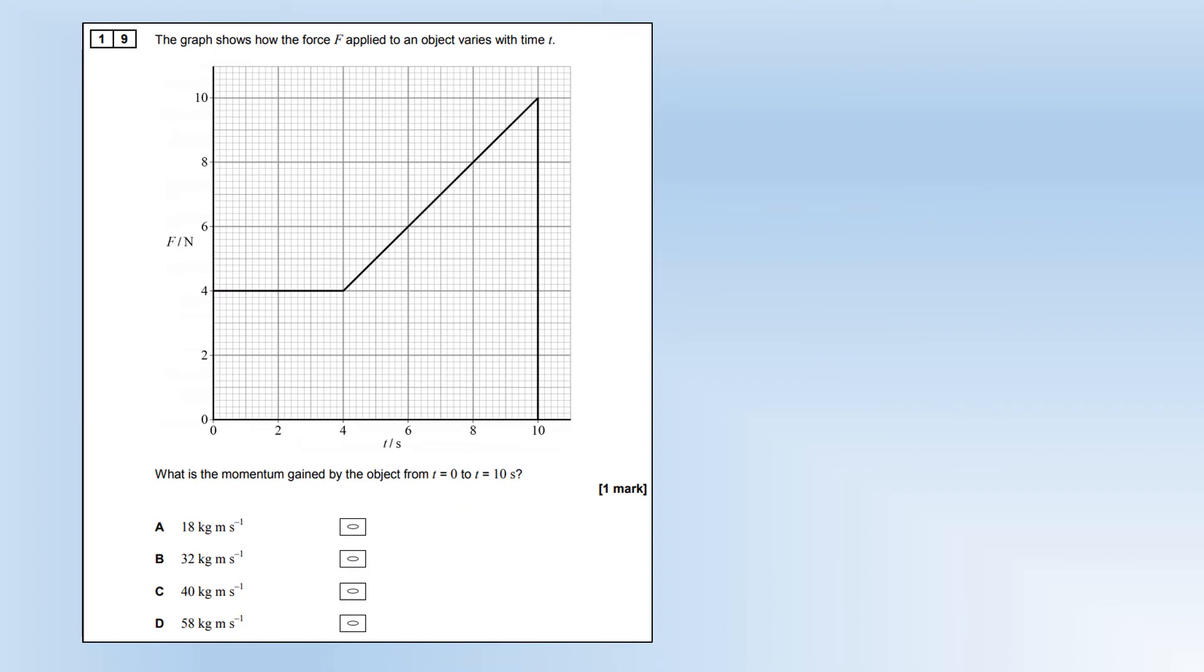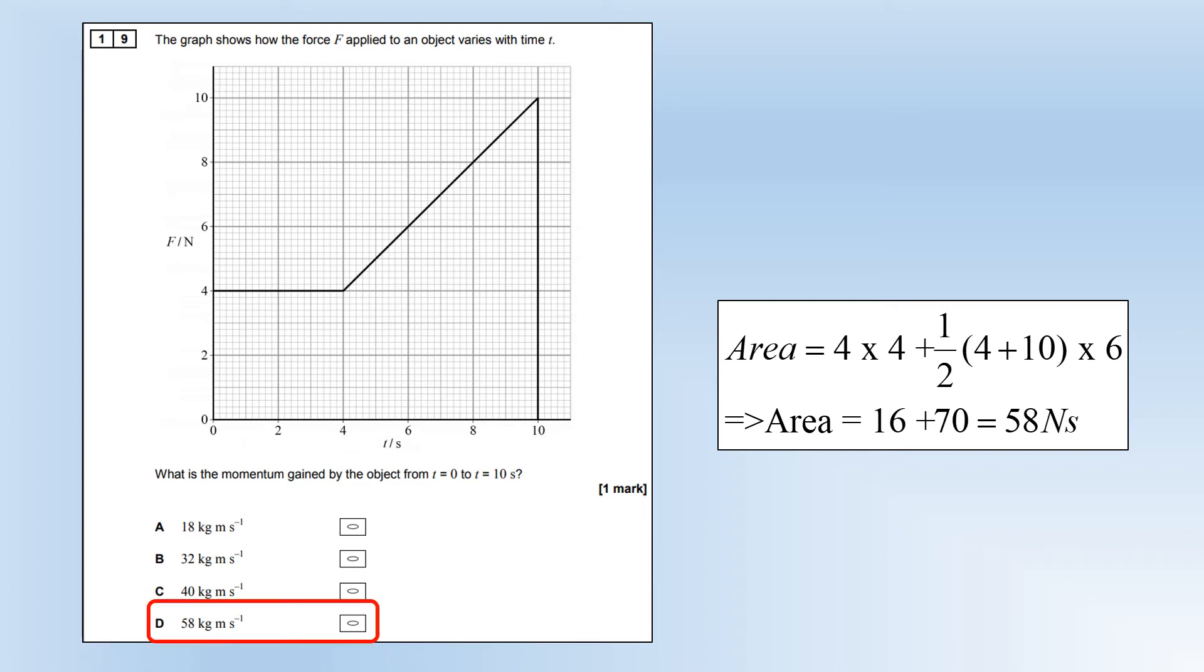The graph shows how the force applied to an object varies at a time. What is the momentum gained by the object? We need the area under the graph. So we've got a square and a trapezium. Plug those numbers in, add them together, and we end up with option D. Newton's seconds unit is the same as kilogramme meters per second.